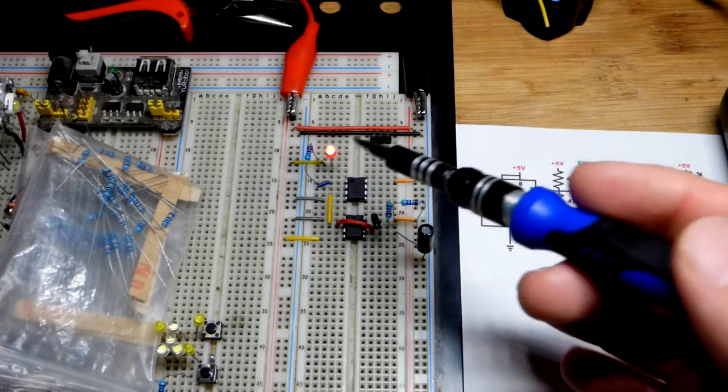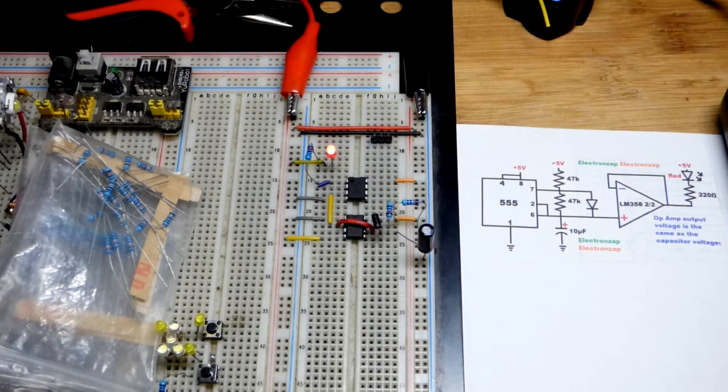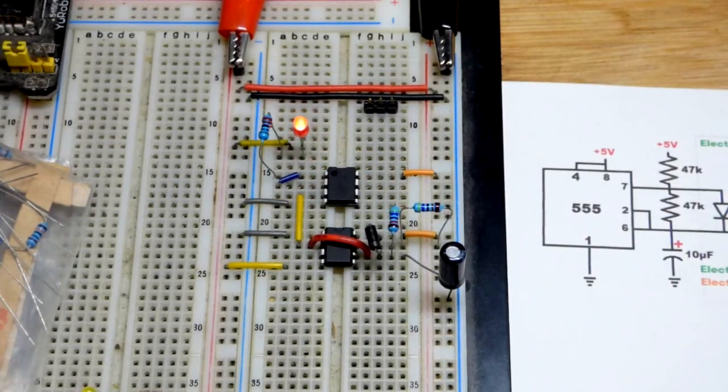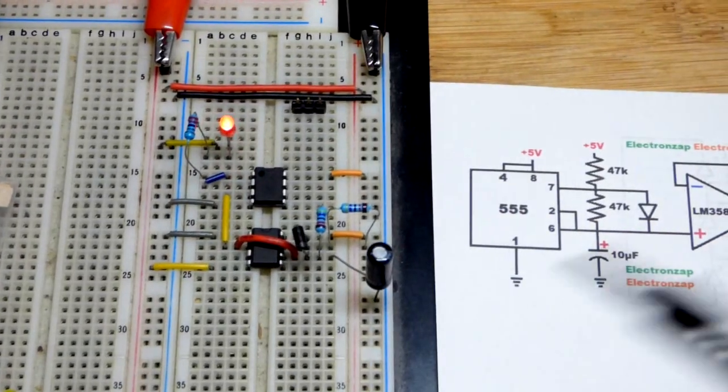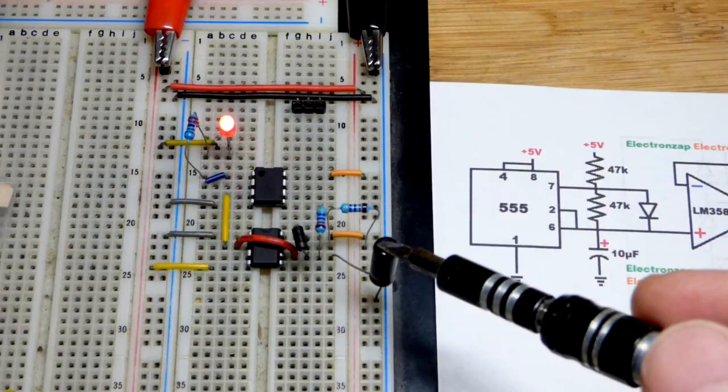The fading LED is a nice effect. We're using a 555 timer to create it. We're actually looking at the capacitor voltage that is going up and down.